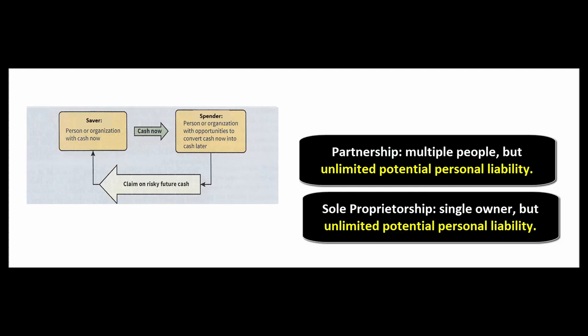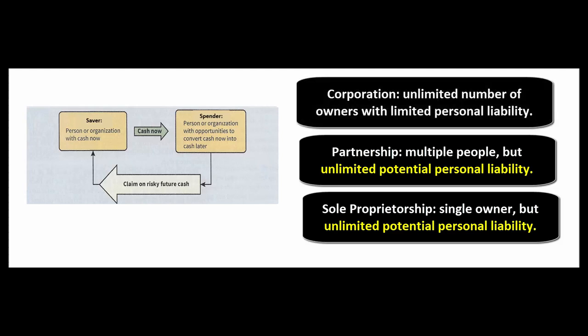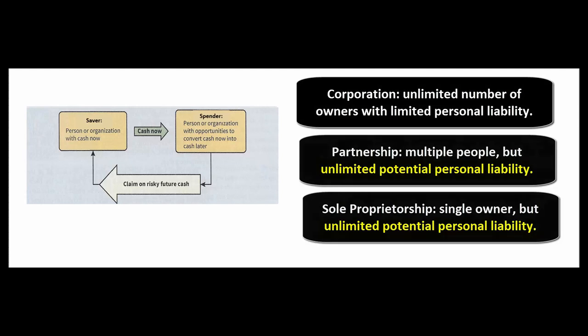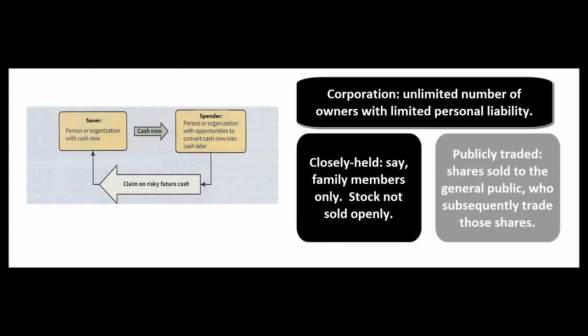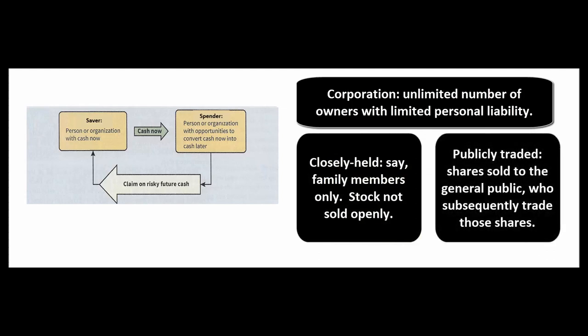If something goes horribly wrong, the people running those businesses could lose everything. A lot of business in the United States has been done in the corporate format so that there's limited personal liability. There are two types of corporations: the closely held one where a family owns all the shares, and the publicly traded corporation.